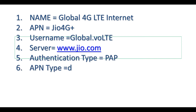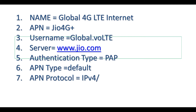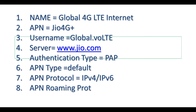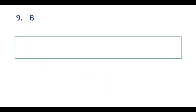6. APN type equals default. 7. APN protocol equals IPv4/IPv6. 8. APN roaming protocol equals IPv4/IPv6.